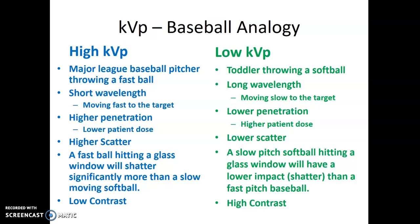But high KVP also increases scatter. If you think of a window pane — if you throw a fastball at a window pane, it's going to shatter into many pieces. If my four-year-old lobs a softball at that same window pane, it's only going to crack a little bit. So high KVP is the fastball: short wavelength, higher penetration, higher scatter, and it's considered low contrast. Low KVP is the reverse — long wavelength, moves slow to the target, lower penetration, which increases patient dose. Low KVP has lower scatter and is considered high contrast.